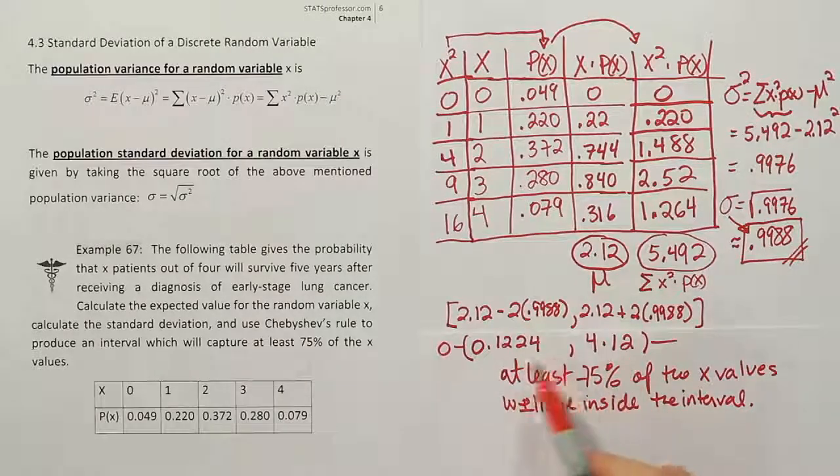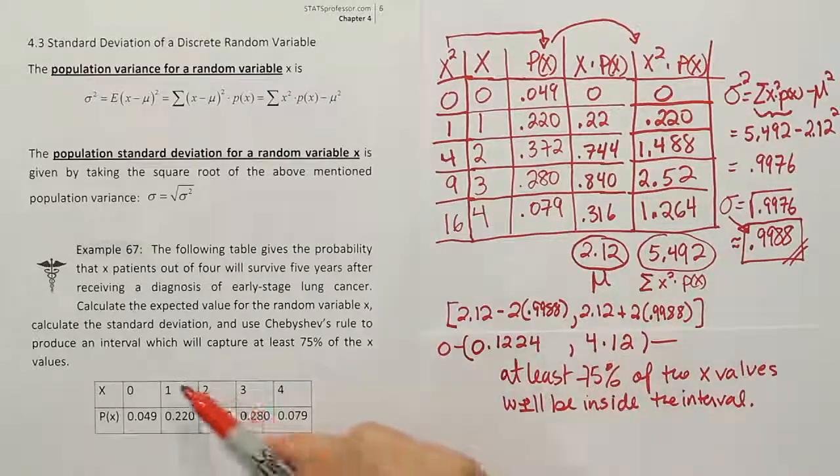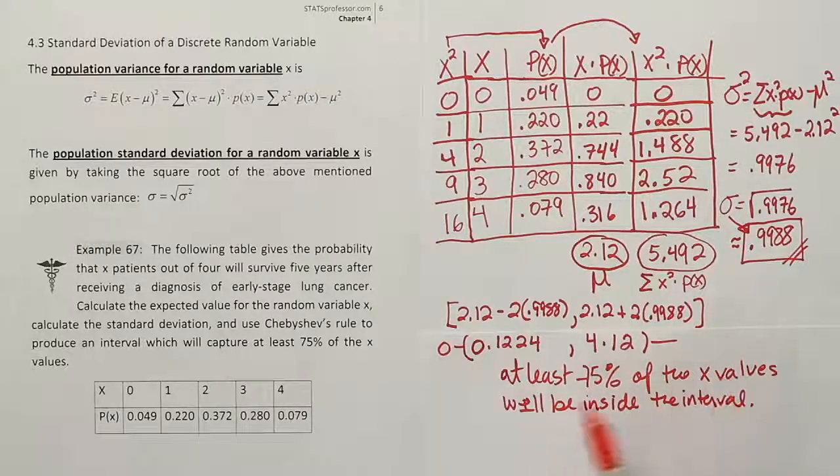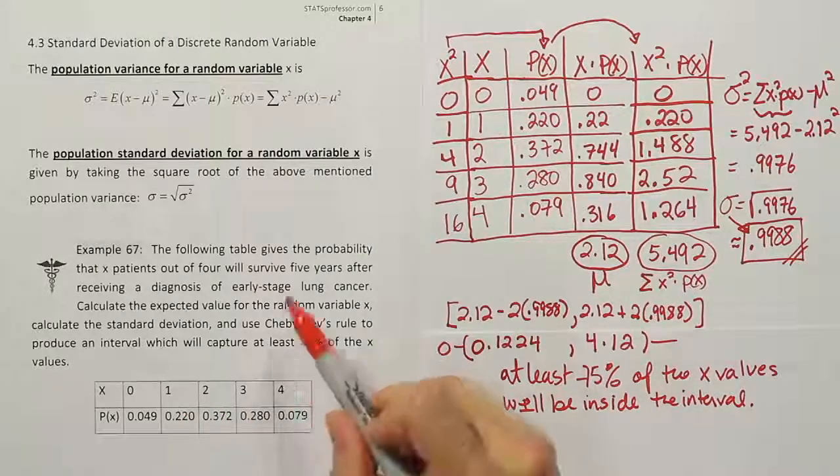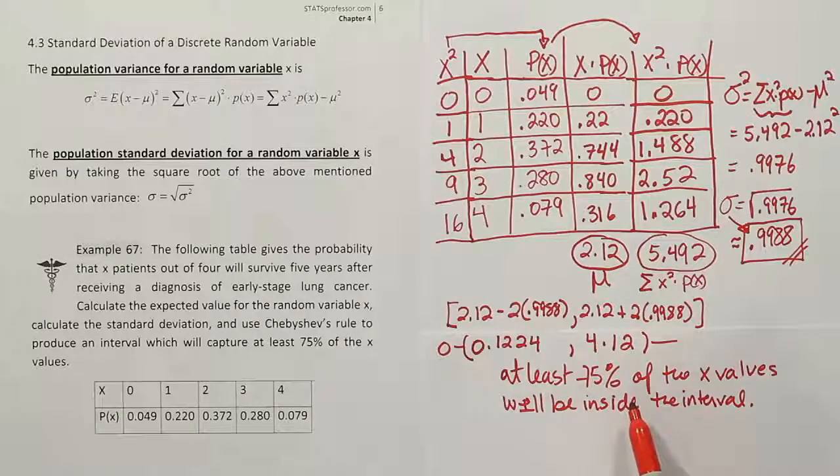0 is actually outside of the interval. It's below the interval, right? So on a number line, 0 is not included in this space but 1 is in there, 2 is in there, 3 is in there, and 4 is in there. So any one of these can occur inside that interval. So we're saying at least 75% of the time when we put 4 people into the hospital that are suffering from this cancer, at least 75% of the time between 1 and 4 will end up surviving by the end of the period.